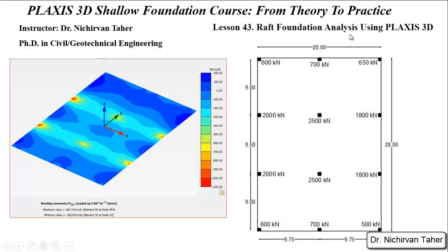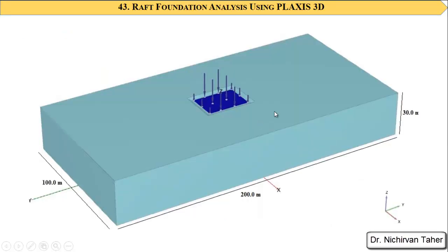This is going to be our example. The raft foundation dimension is 20 meters by 28 meters, and it supports a number of columns with different loads, which are point loads. The center-to-center spacing between the columns in both directions is shown in the figure.